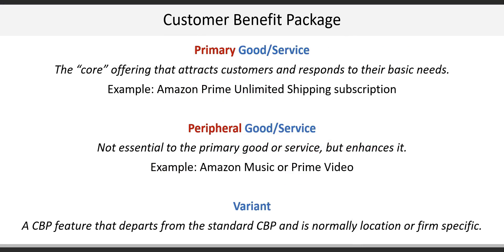The Customer Benefit Package, or CBP, includes the Primary Good or Service, the Peripheral Good or Service, and Variants. A Primary Good or Service is the core offering that attracts the customer and responds to their basic needs — for example, Amazon Prime's unlimited shipping subscription. The Peripheral Good or Service is something that is not essential to the Primary Good or Service but enhances it. Using Amazon again, Amazon Music or Amazon Prime Video, which is included in the Amazon Prime subscription, enhances the value of the offering.